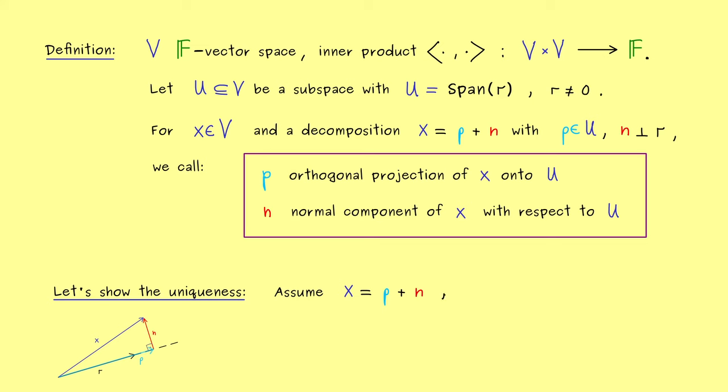Which means we assume that we have two decompositions for x. And for the second one we just use a tilde on p and n. Hence please don't forget we still have the two properties of p-tilde and n-tilde as well. Which means p-tilde is in u and n-tilde is in the orthogonal complement of u. So please recall the definition. The orthogonal complement of u has all the vectors from V that are orthogonal to r.